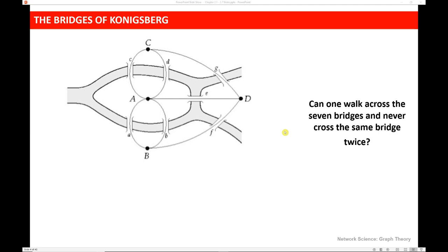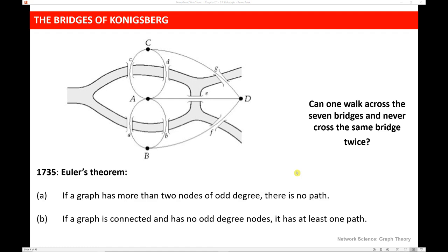This is significant because he was able to demonstrate something about the property of the graph itself. It didn't matter how hard anyone tried to solve the problem — they still wouldn't be able to find a path due to the nature of the graph itself. So in 1735, the property he discovered and proved was that if a graph has more than two nodes of odd degree, there is no path. The degree of a node is how many edges are connected to that node. So if a graph had more than two nodes of odd degree, meaning an odd number of connections, there wasn't a path.